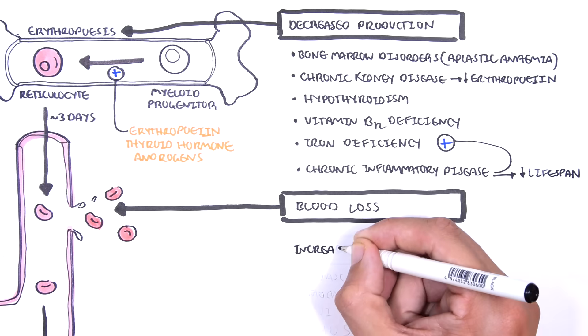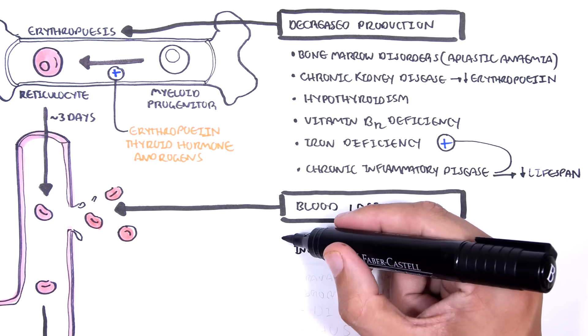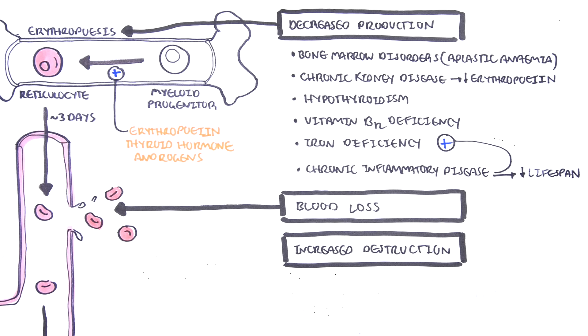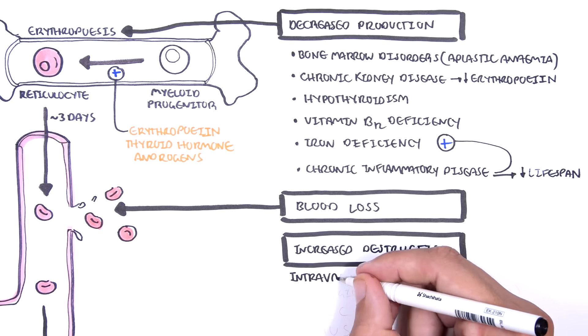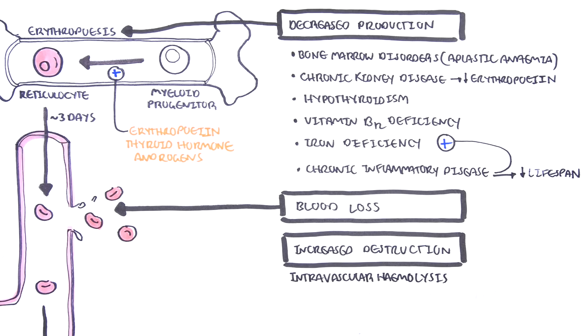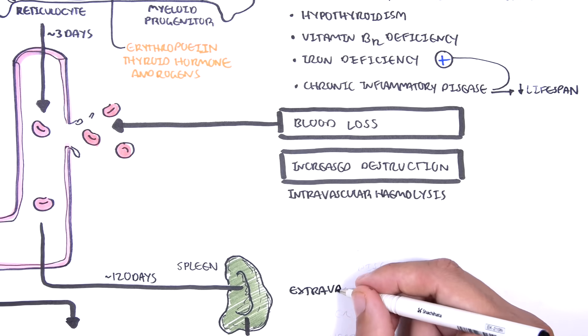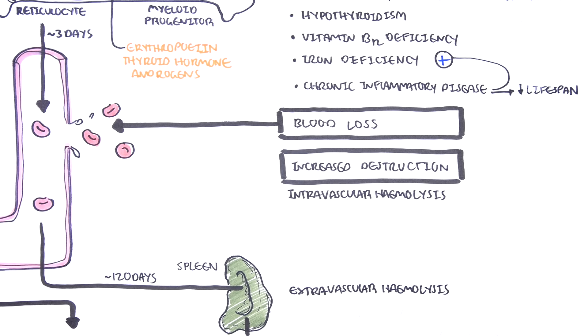Another mechanism leading to anemia is through the increase in red blood cell destruction. Increased destruction of red blood cells really means hemolysis and this can be further divided into intravascular hemolysis, which means destruction of red blood cells in the vasculature, and extravascular hemolysis, which means destruction of red blood cells outside the vasculature, typically in the reticuloendothelial system we talked about.